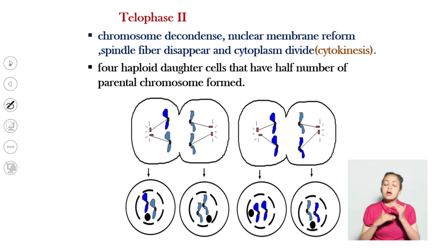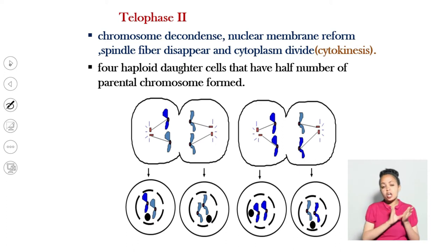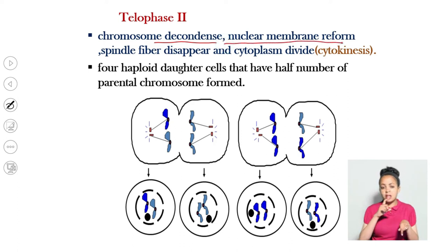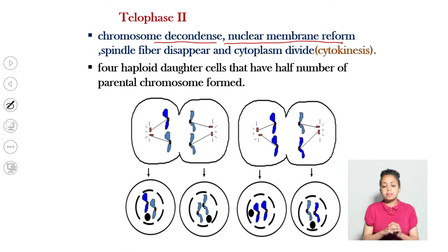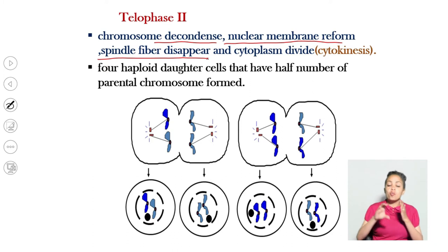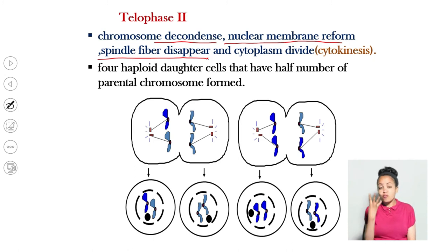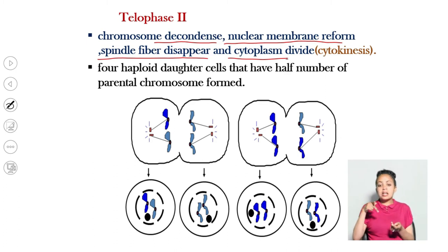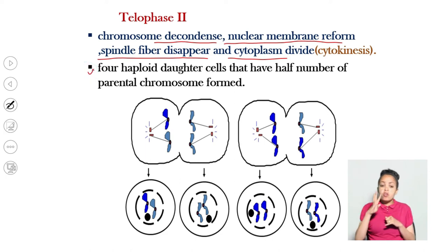The next stage of meiosis II is telophase II. During telophase II, chromosomes become decondensed. The nuclear membrane that disappeared during prophase II reforms and reappears. Spindle fibers that formed during prophase II disappear. There is a division of the cytoplasm — which we call cytokinesis — for the daughter cells to form.